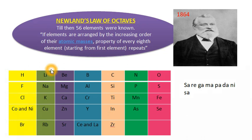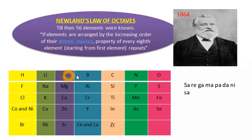Starting from lithium as the first element: counting one through seven, sodium is the eighth element, and the properties of sodium are indeed similar to lithium. Taking sodium as first, counting to eight gives potassium, and their properties were found to be similar. Similarly, taking beryllium as first, the eighth element is magnesium, and magnesium's properties were found to be similar to beryllium's. In this way, he arranged the known elements in rows of seven.